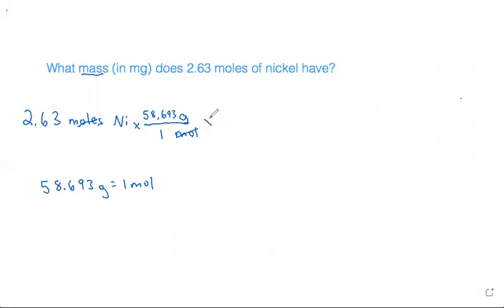From here, we want to not leave the answer in grams, but they want the answer in milligrams. So we put the unit of grams on the bottom to cancel and milligrams on top using the conversion factor that one gram is equal to a thousand milligrams. And the units of grams cancels and leaves us with just milligrams.